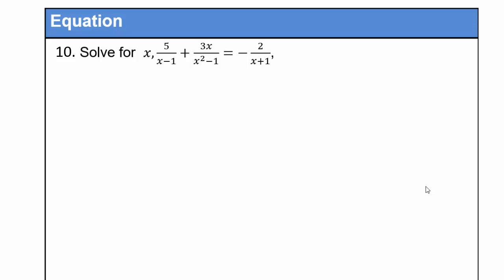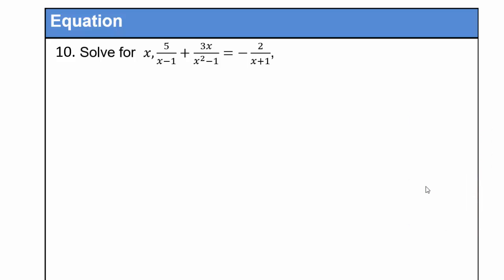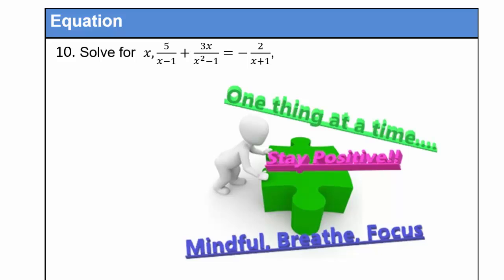Alright, let's do one more problem. Solve for x: 5 over x minus 1 plus 3x over x squared minus 1 equals negative 2 over x plus 1. Go ahead, pause the video. If you're feeling overwhelmed, remember: breathe, take a deep inhale and exhale, both feet on the ground, sit as straight as you can so your spine is straight, be alert and not distracted, one thing at a time.